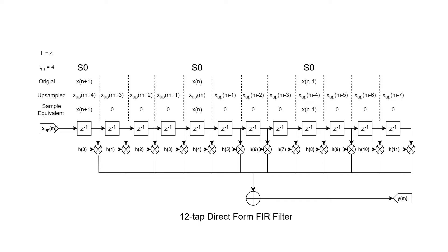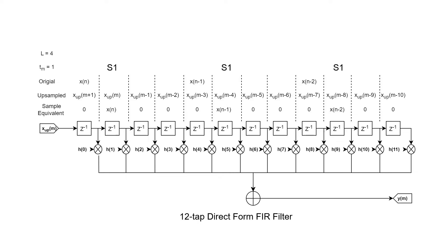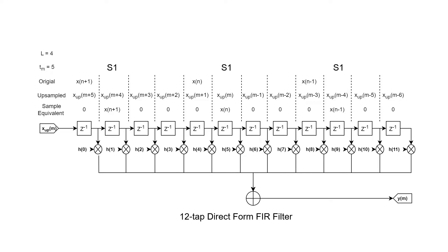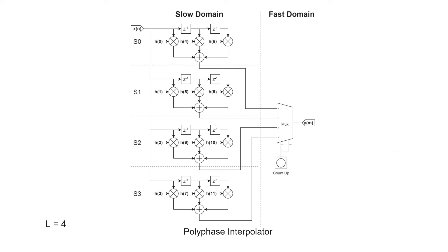As time advances, the samples change their location with respect to the coefficients. However, the overall amount of non-zero values in the delay line remains the same. So what we can do is split the filter into L segments, where L is the interpolation factor, and compute only the segment that has non-zero input samples. After rearranging, the filter is split into four sub-filters, each containing the coefficients of the respective segment. In other words, we have divided the filter into four phases, hence the name of the filter.